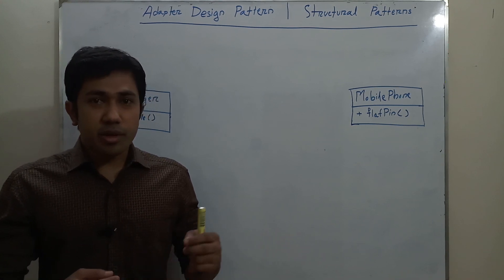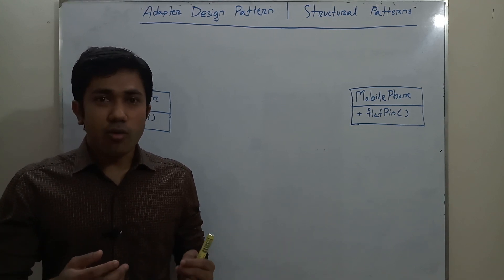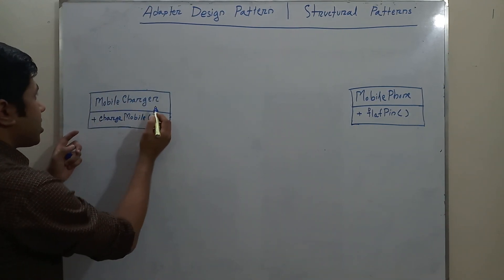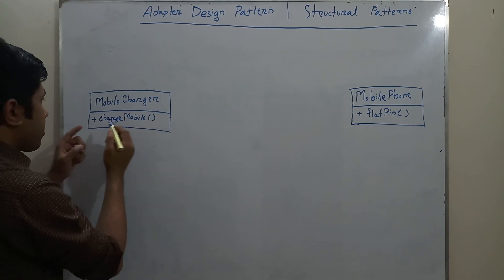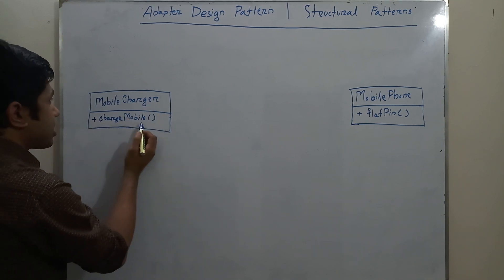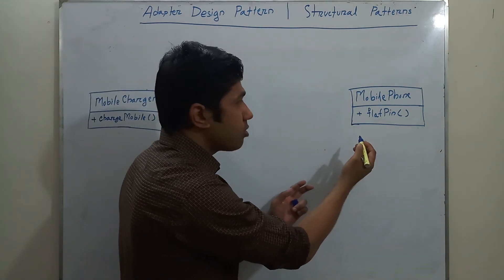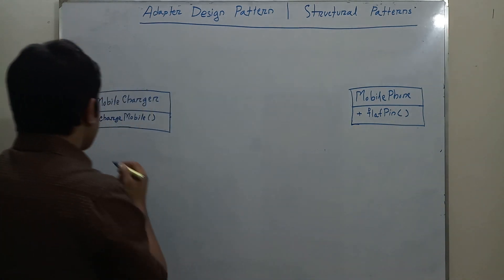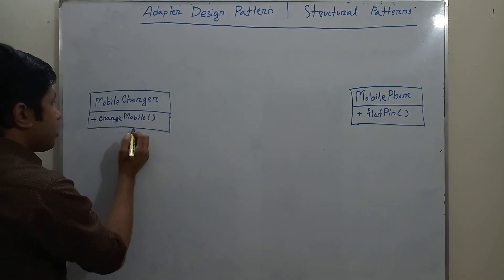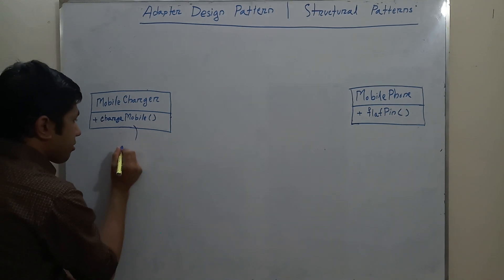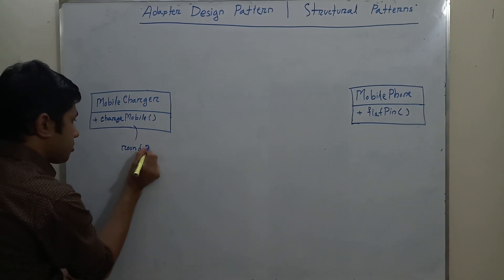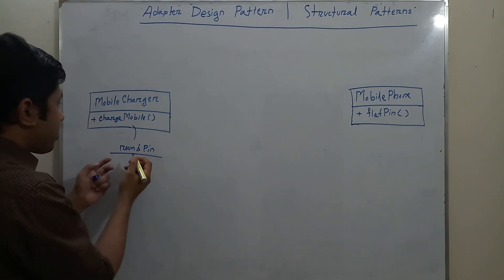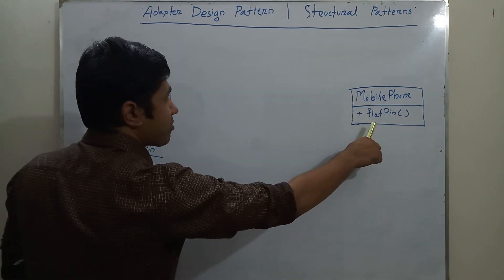Let's see using a UML diagram how the adapter design pattern solves the problem. Here I have a mobile charger class, and the functionality of the mobile charger is to charge the mobile. I have a mobile phone which is a flat pin mobile phone, and the mobile charger pin is a round pin.